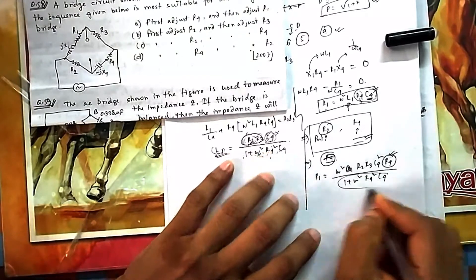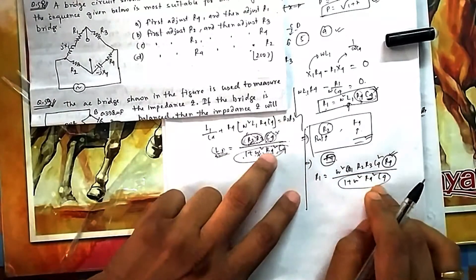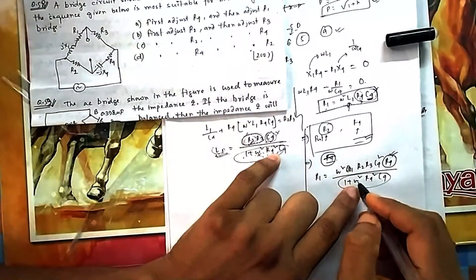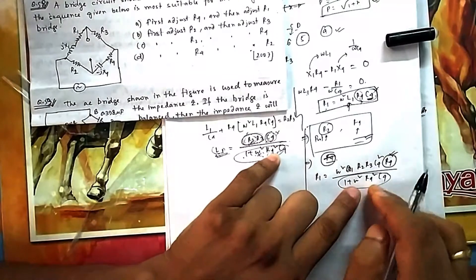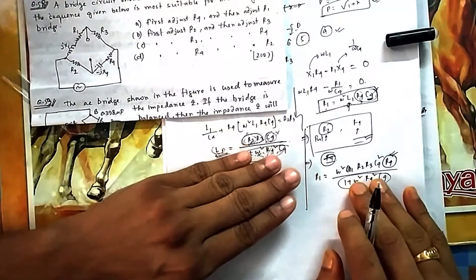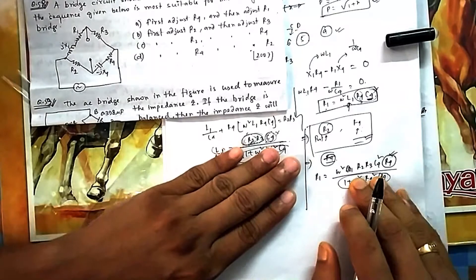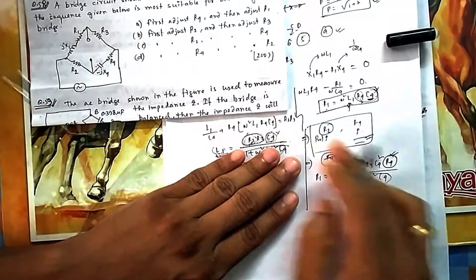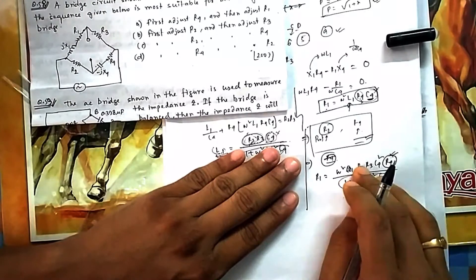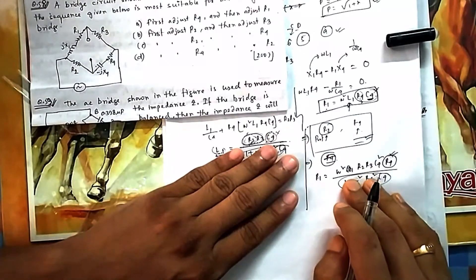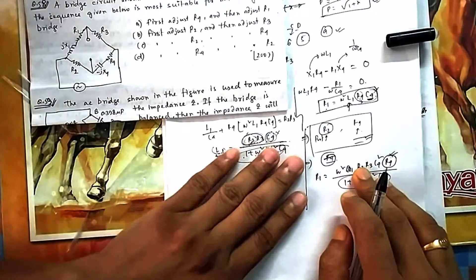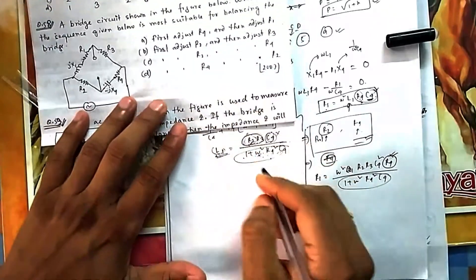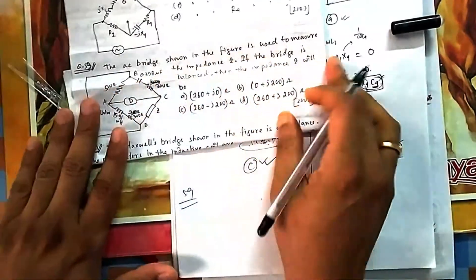If Q is high, the denominator term ω²R4²C4² can be neglected relative to 1. In the numerator, R4 is not present independently, so R4 primarily affects R1. The correct balancing sequence is: first change R2 to set L1, then adjust R4 to tune R1. That is option C.